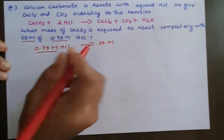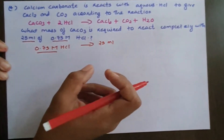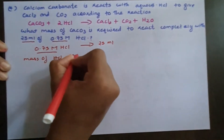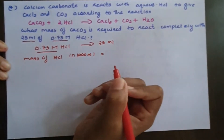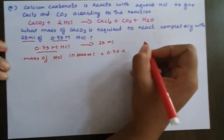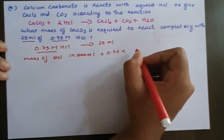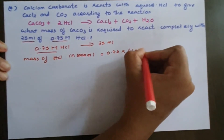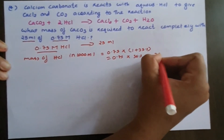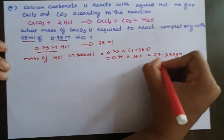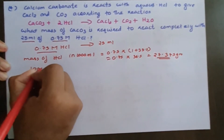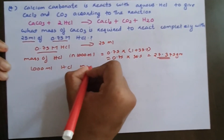1 mL of solution is 0.75 moles of HCl. Scaling up, 1000 mL of HCl — how much is it?